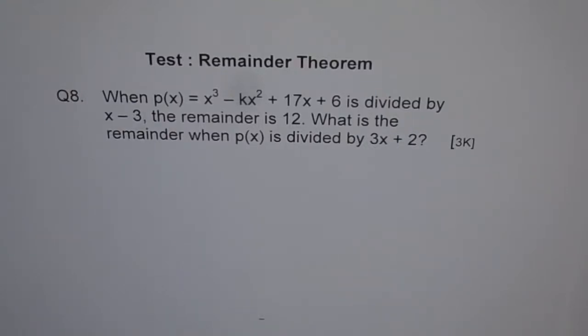Question 8. When p(x) equals x cube minus kx square plus 17x plus 6 is divided by x minus 3, the remainder is 12. What is the remainder when p(x) is divided by 3x plus 2?